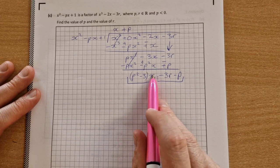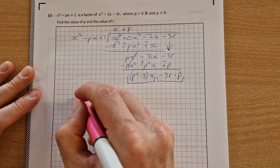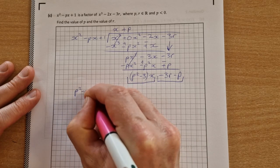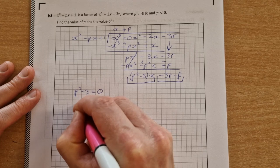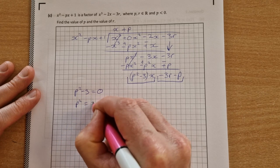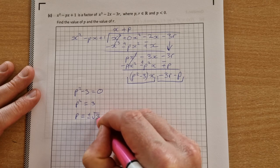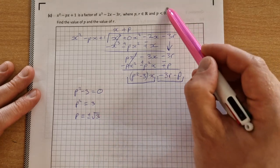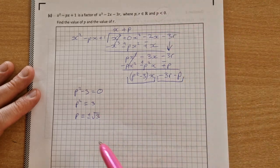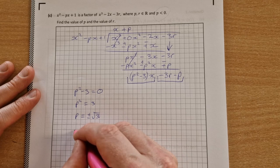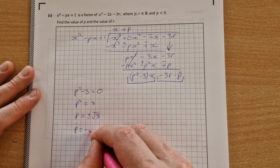So the first part, we don't put the x in, just p squared minus 3 is equal to 0, p squared is equal to 3, so p is equal to plus and minus root 3. We're told in the question that p has to be less than 0, so we don't accept the positive value, we just say p is equal to minus root 3.